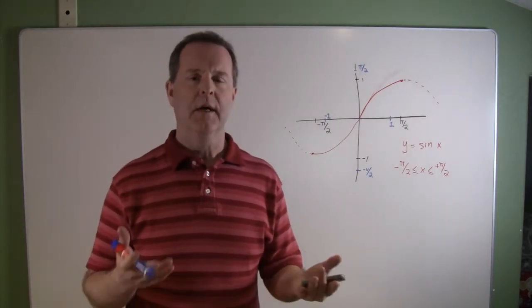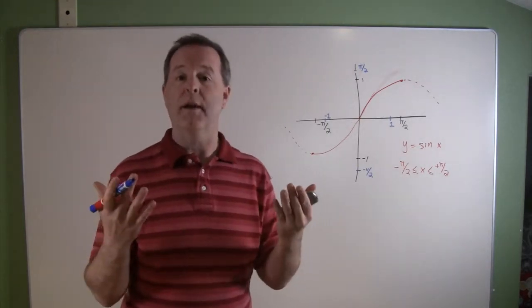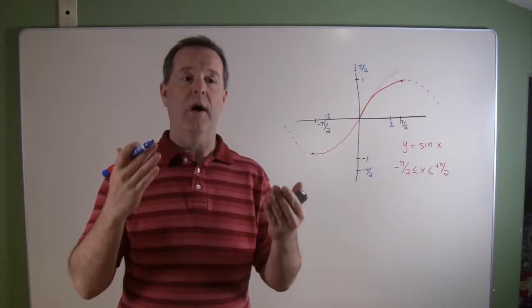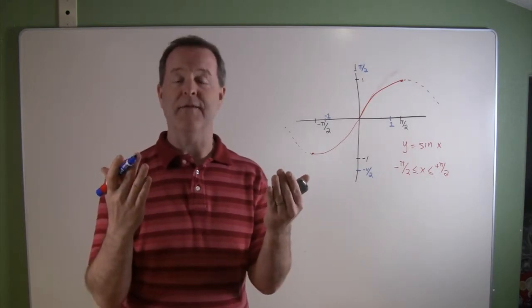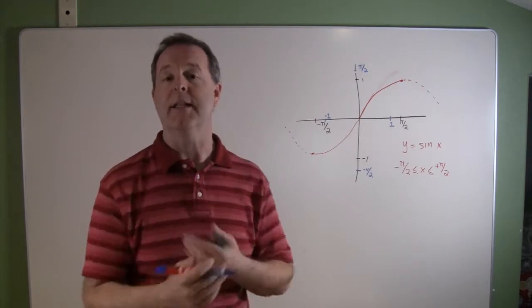So what's its inverse? Well, there's a couple of ways to think about it. One way to think about it, its inverse, are its coordinates just switched around. Where we have our x and y coordinates, its inverse are those same values, but the y becomes the x and the x becomes the y.